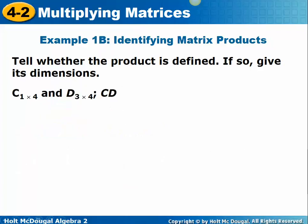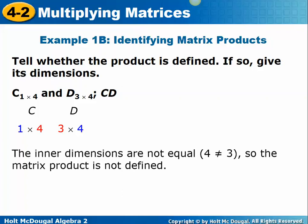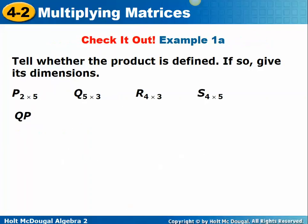Let's look at another one. Is CD defined if C is 1 by 4 and D is 3 by 4? C is 1 by 4, D is 3 by 4. The 4 and the 3 are not the same — the columns of the first do not equal the rows of the second. So it is not defined; you could not multiply those.